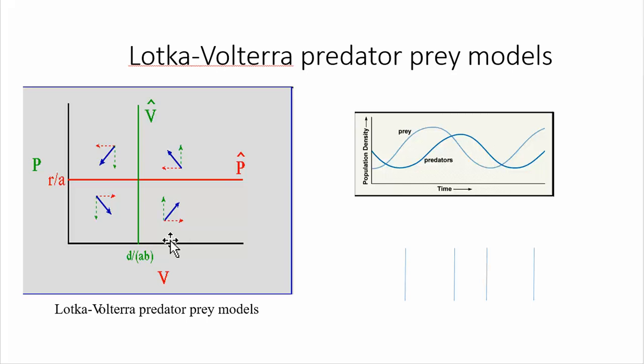And these are just imagining changes in the numbers of individuals of predators and prey through time steps. And so you can put these two vectors together, the red ones and the green ones, to get the blue ones. And notice the blue ones more or less point around in a circle moving in a counterclockwise fashion.